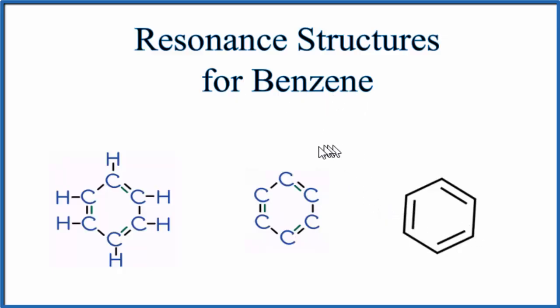When we draw the Lewis structure for benzene, we might come up with something like this, where we have our six carbons and six hydrogens, and we have alternating double bonds on the carbon. So this is one way to draw the Lewis structure.